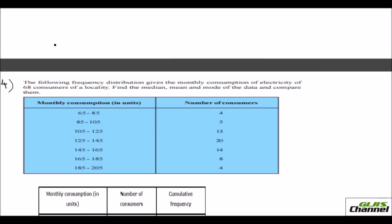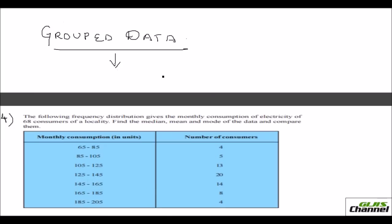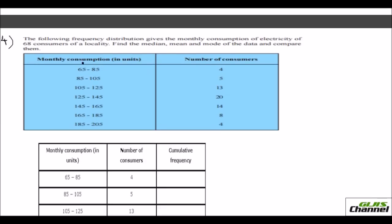Now I am going to do the grouped data. So long we were doing ungrouped data. Now this is grouped data which you are doing now. Here a question has been given here. The following frequency distribution gives the monthly consumption of electricity of 68 consumers of the locality. Let's just do the median alone here. Find the median of the data.